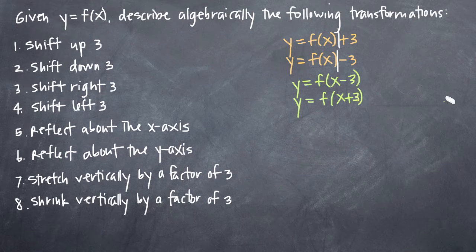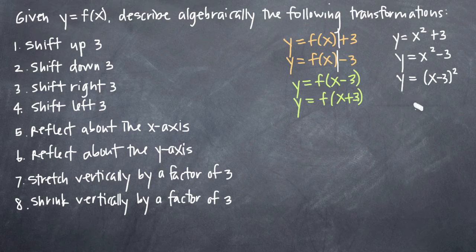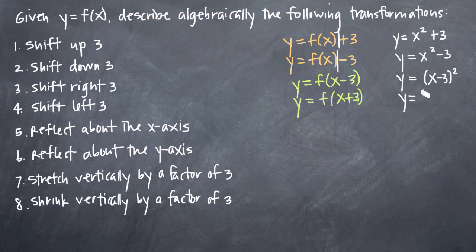So again, and maybe we can go through and do this here. If we had a function y equals, let's say, x squared, right? Then our transformation here to shift up 3 would just be x squared plus 3. To shift down 3 would be x squared minus 3. To shift to the right would be y equals x minus 3 squared. So you can see the difference there.